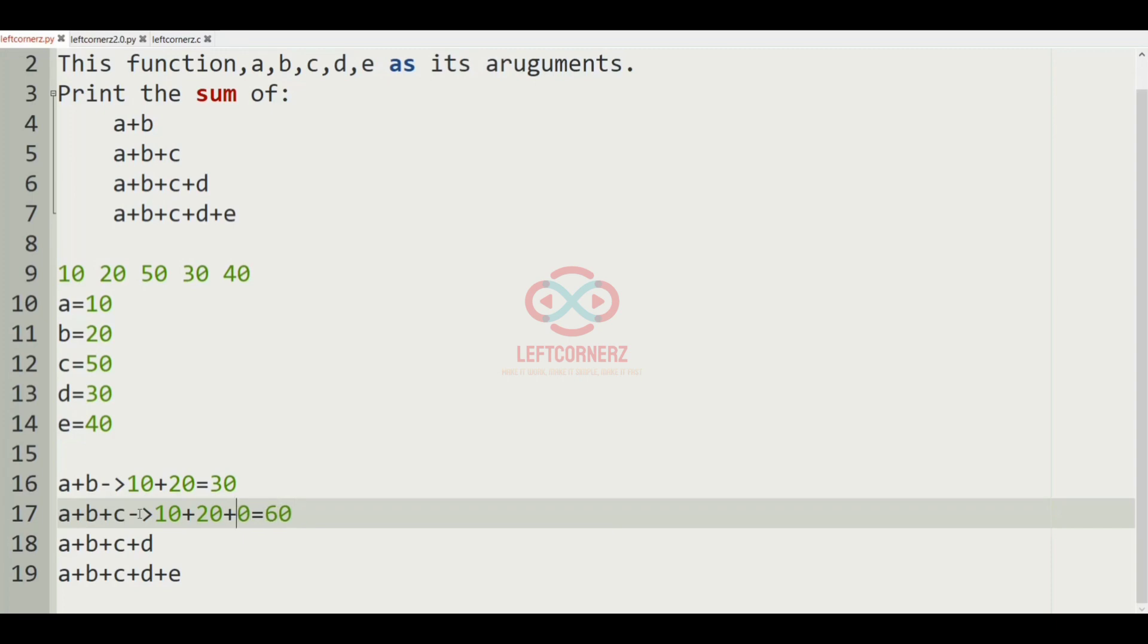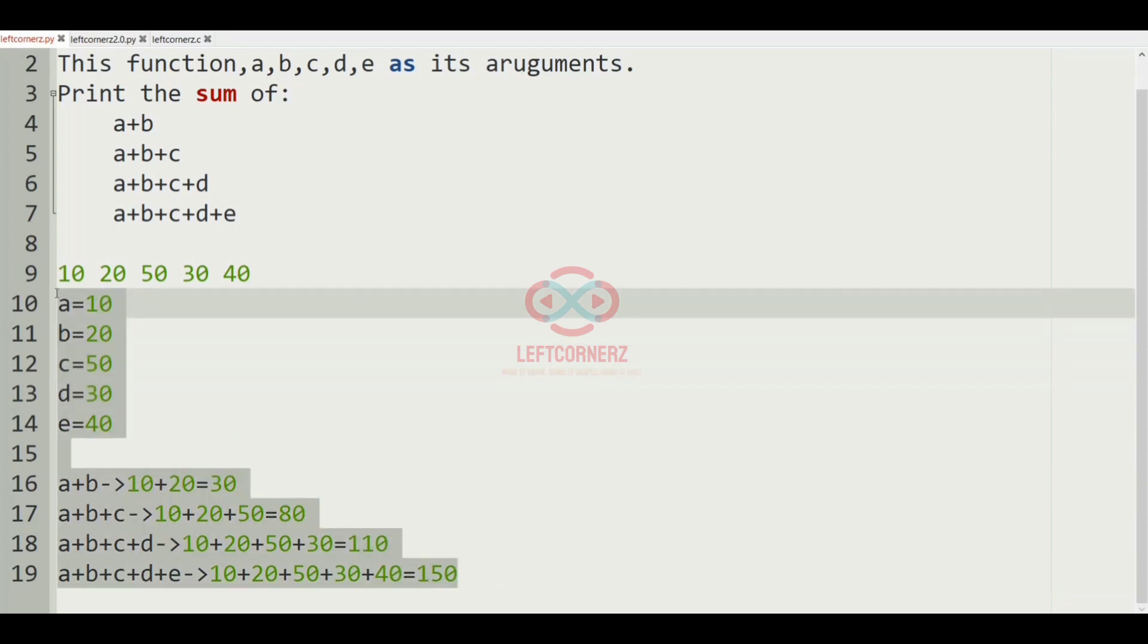And then we have a plus b plus c plus d, so 10 plus 20 plus 50 plus 30, which gives us 110. And then a plus b plus c plus d plus e, that is 10 plus 20 plus 50 plus 30 plus 40, gives you 150. So now this will be our output.